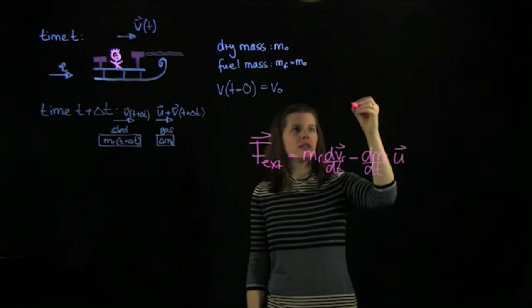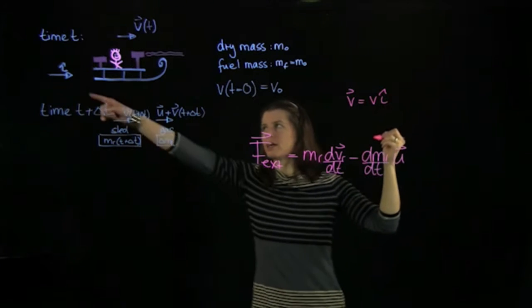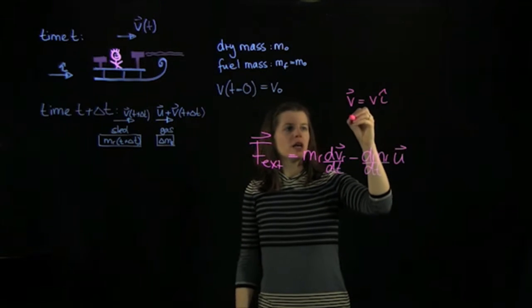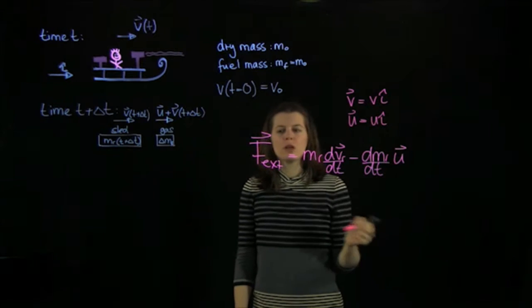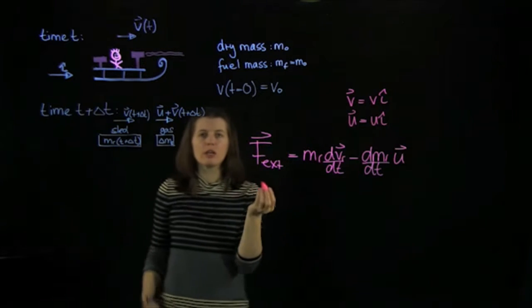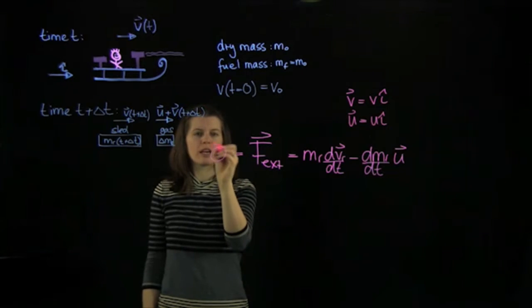And we know that v equals v i hat. I hat's going in the direction of motion. And u equals u i hat. We also know that there are no external forces applied to the sled. So that's actually 0.